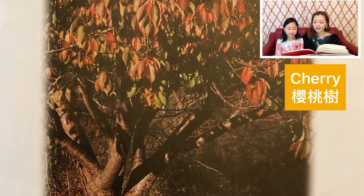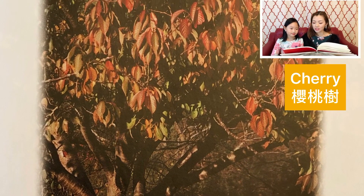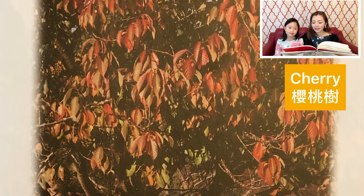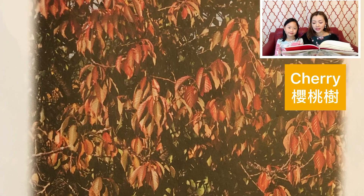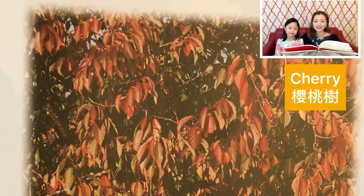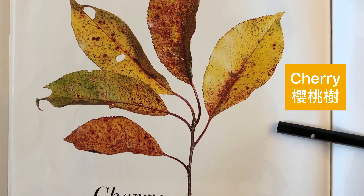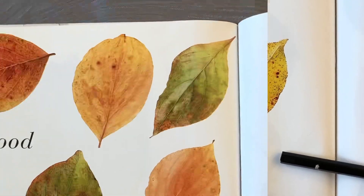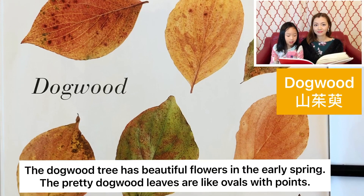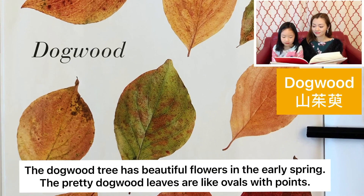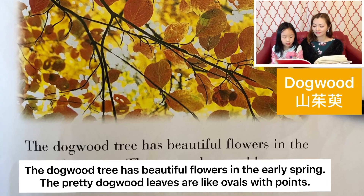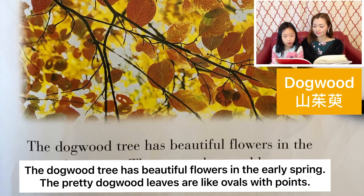树桃就是樱桃树的果实，有些很酸，有些很甜。树桃树的树叶一面会比另外一面更加光滑有光泽。Dogwood. The dogwood tree has beautiful flowers in the early spring. The pretty dogwood leaves are like ovals with points.